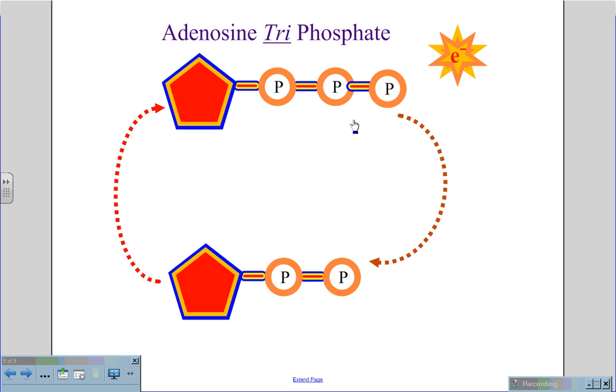Sometimes, in some cases, you may break more than one bond. You could get AMP, adenosine monophosphate. But in the typical form, the cycle is ATP to ADP, adenosine diphosphate.